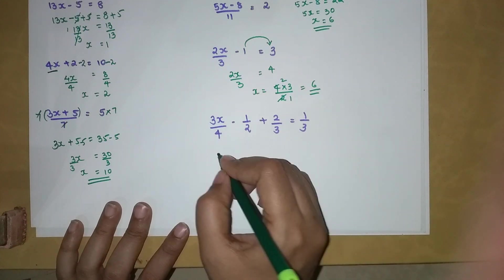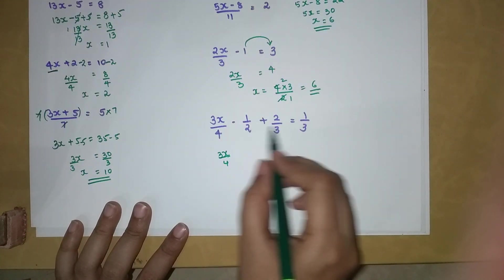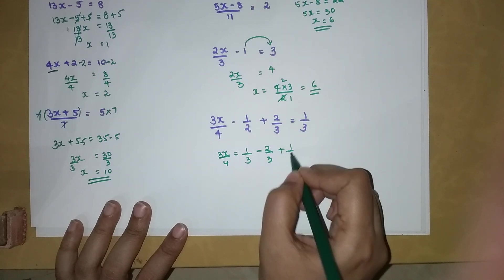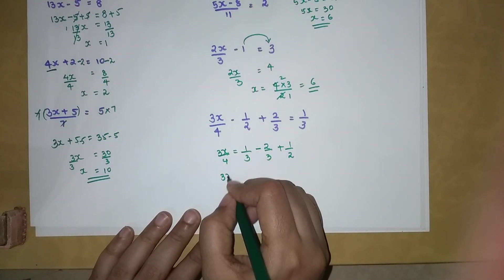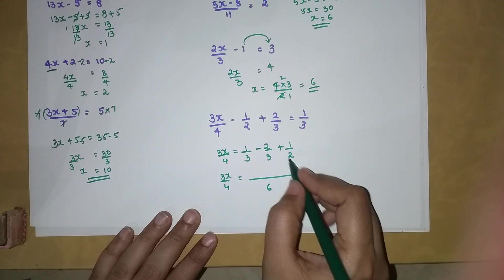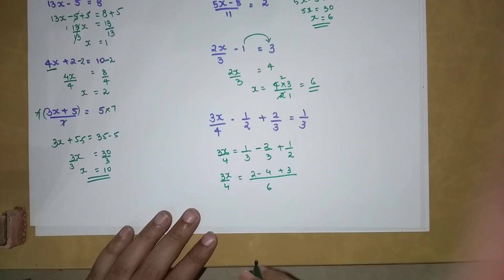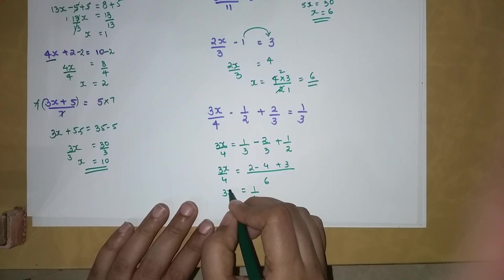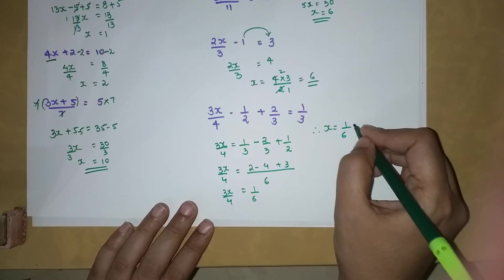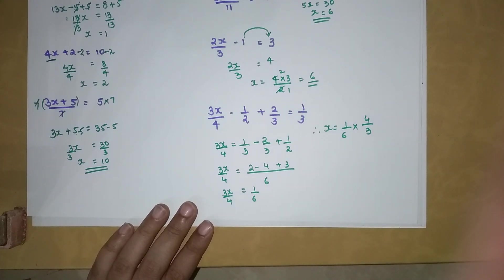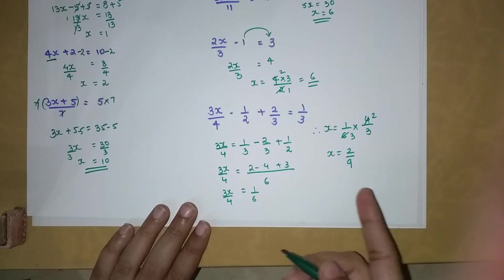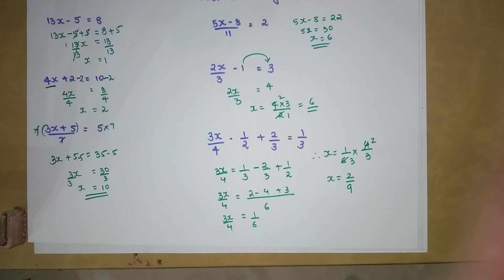Let's quickly do: 3X over 4, and we shift all the fractions — minus 2 over 3 plus 1 over 2 — to the right side. Taking the LCM of 6, we get 2 minus 4 plus 3 over 6, which equals 1 over 6. So 3X over 4 equals 1 over 6, therefore X equals 1 over 6 times 4 over 3. Cancelling, X equals 2 over 9. I purposely took this problem because x does not have to be a whole number — it can also be a fraction.